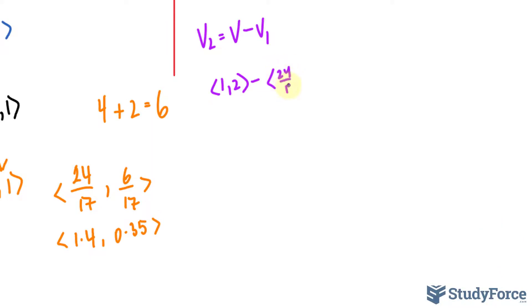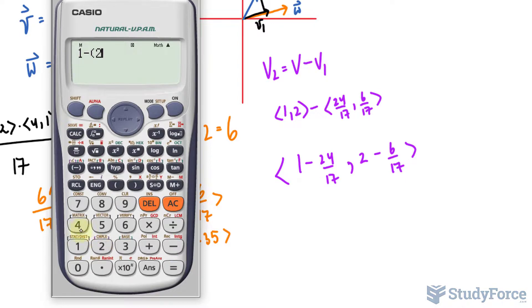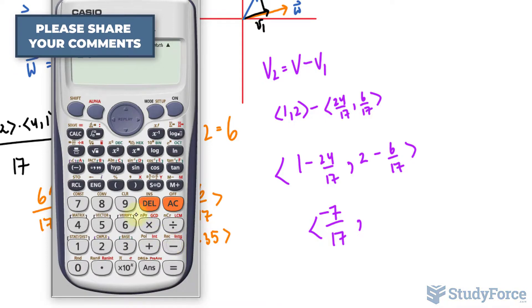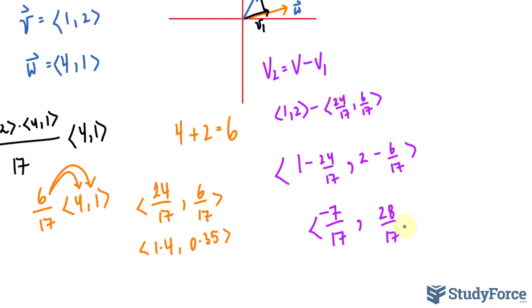are ⟨24/17, 6/17⟩. The way you subtract vectors is you subtract the x components together and the y components together. So 1 − 24/17, that's the new x component of V₂, and 2 − 6/17. Let's go ahead and do that. So 1 minus—I'll use my calculator for the subtraction—−7/17, that's the new x component. And for this, 2 − 6/17. It's always a good idea to put the fractions in parentheses. 28/17. These are the x and y components of the vector V₂.